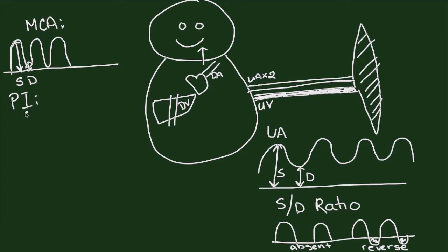So the pulsatility index is systole minus diastole over the mean pressure throughout the cardiac cycle. In this example, the mean would be somewhere about here, and the ultrasound machine will calculate that for you automatically once you make your measurements of systole and diastole in that area under the curve.